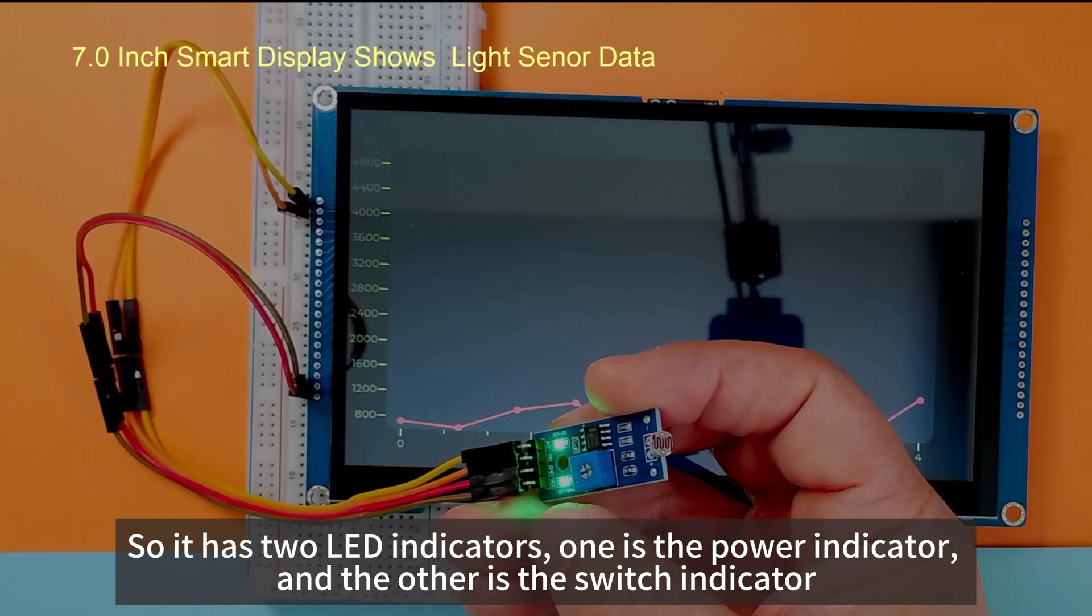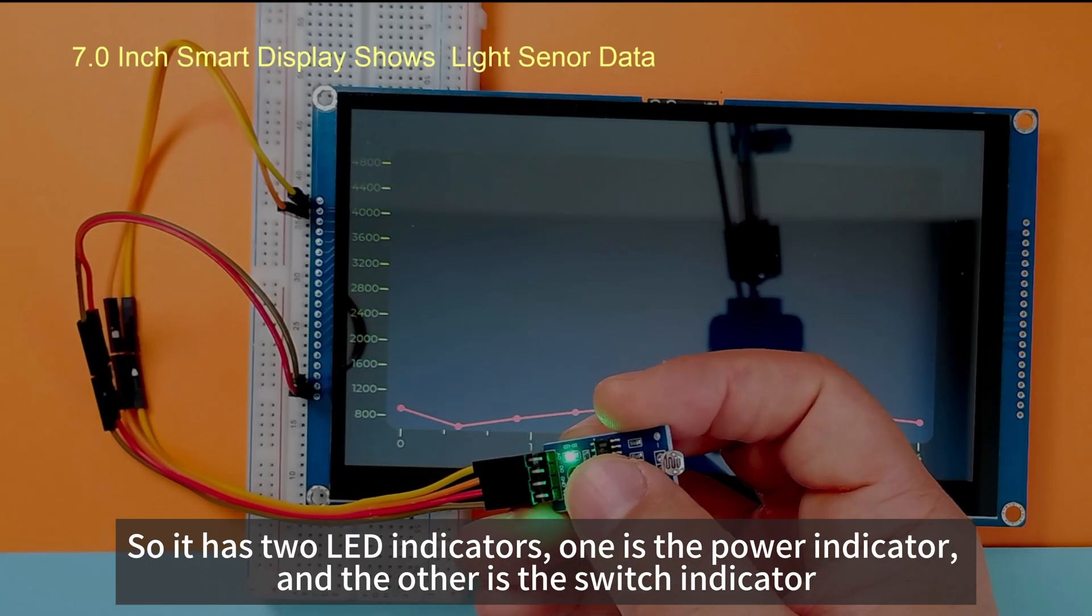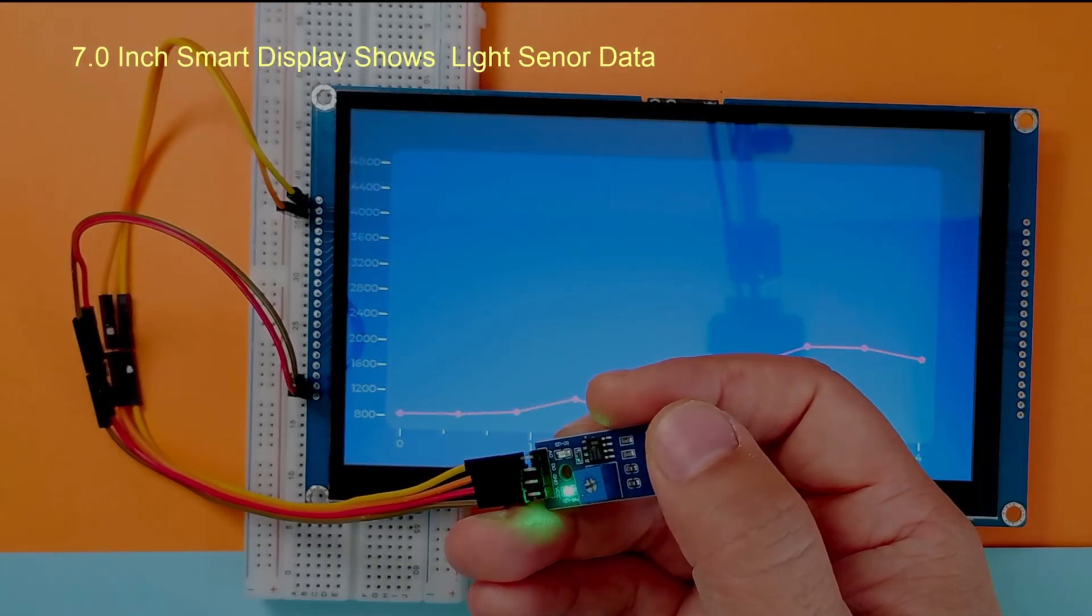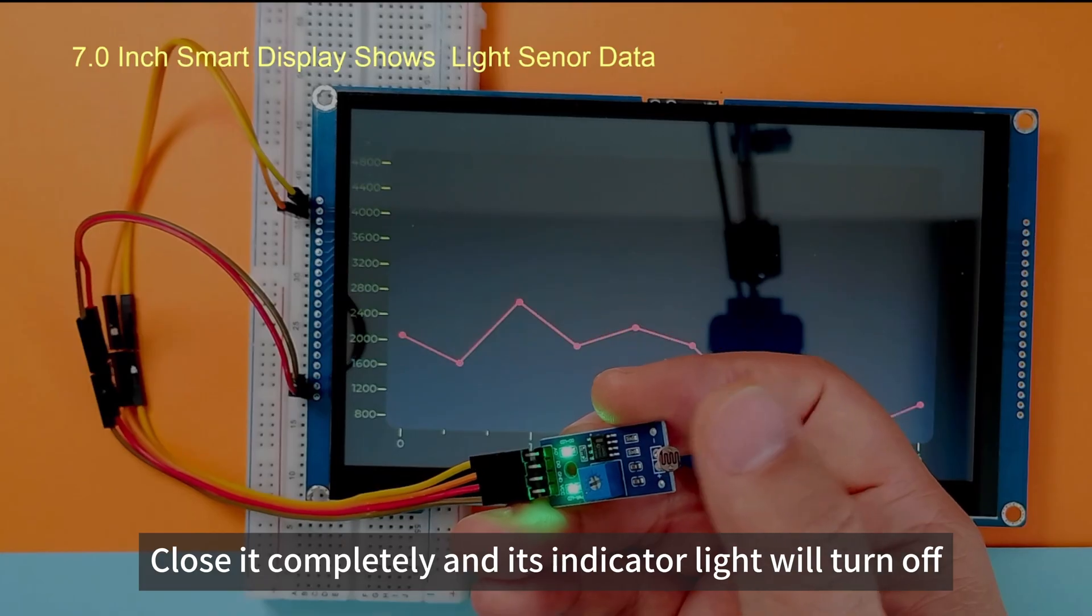So, it has two LED indicators. One is the power indicator and the other is the switch indicator. Close it completely and its indicator light will turn off.